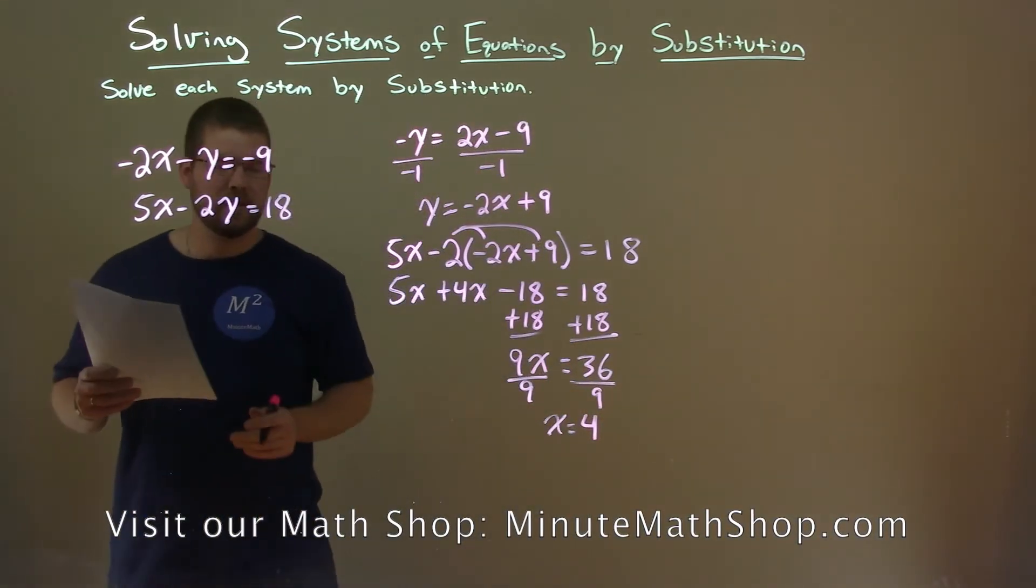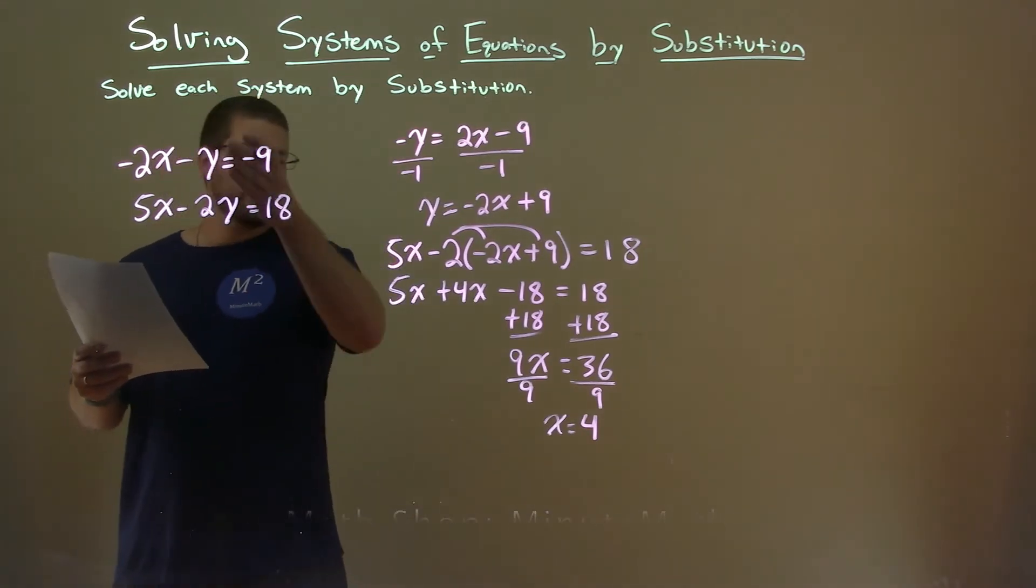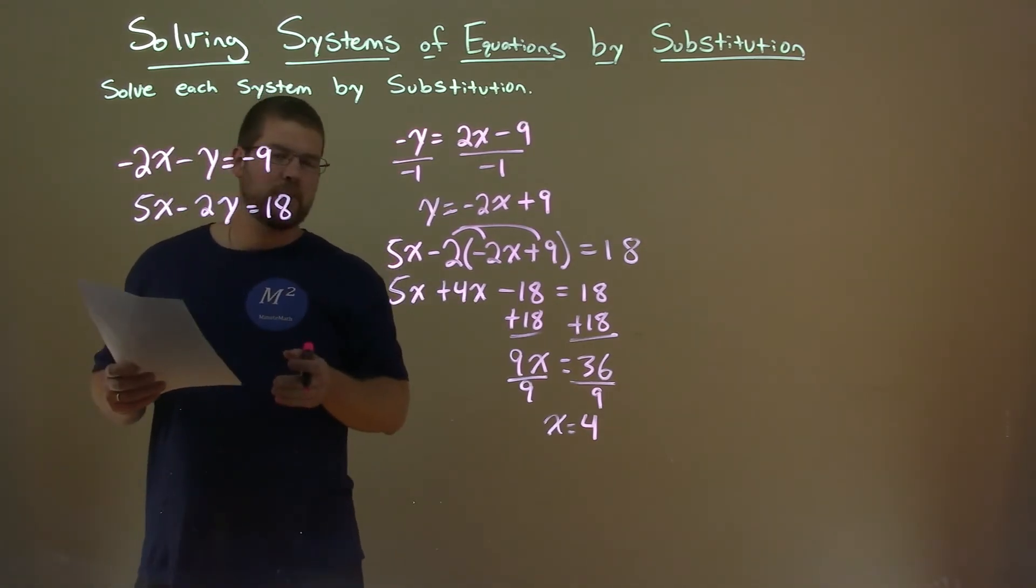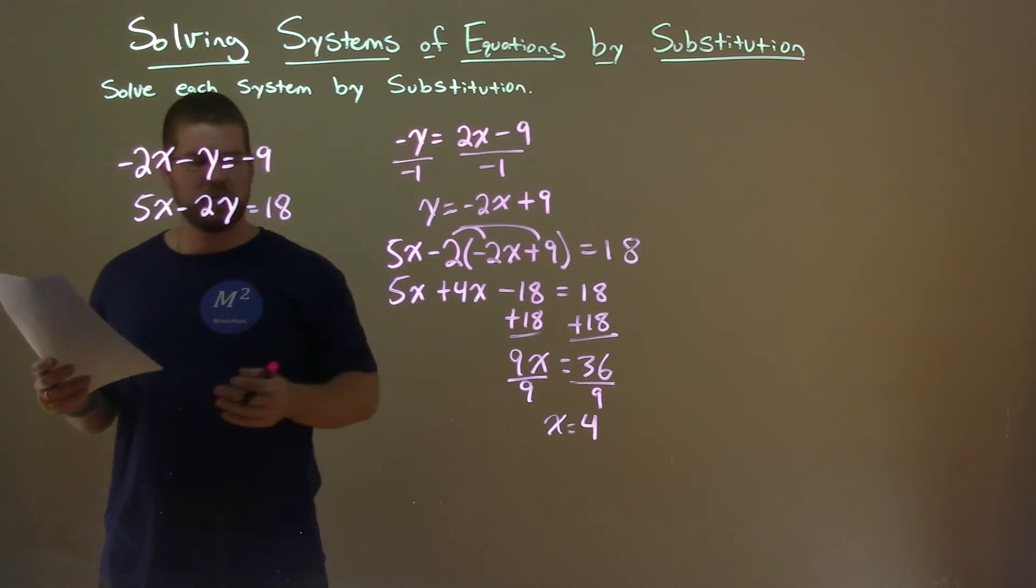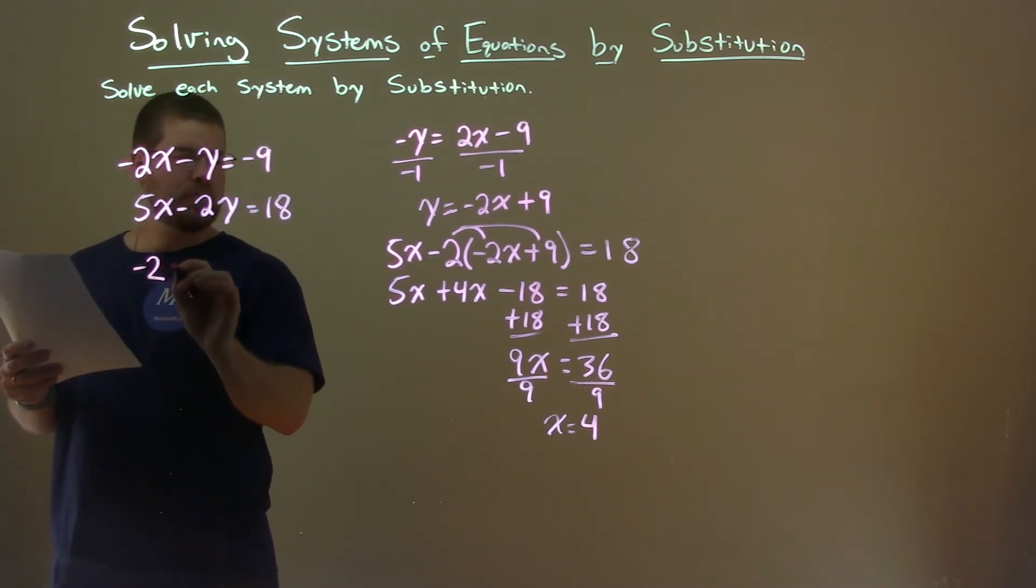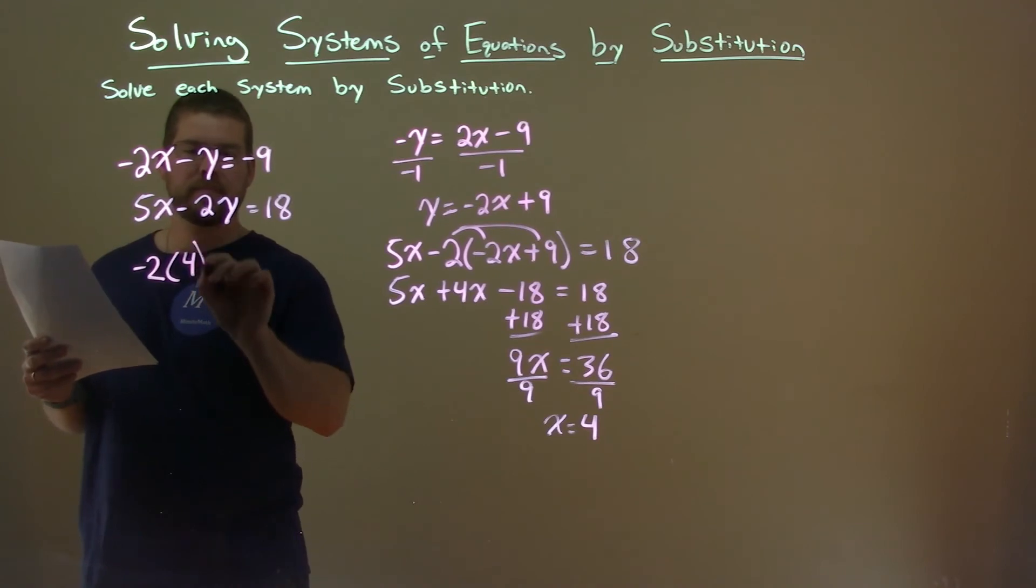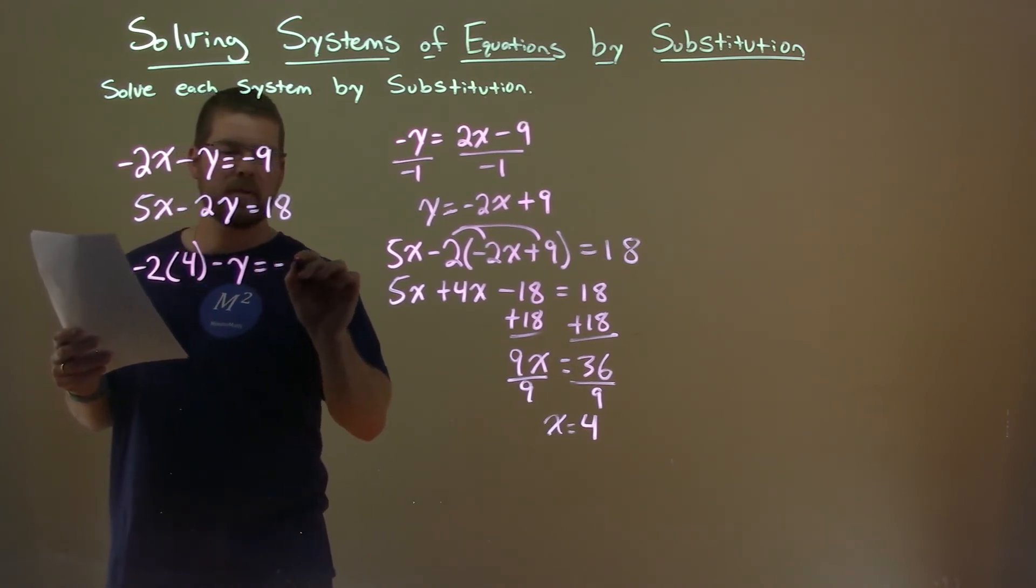We've got to solve for y. So, try to find an equation which I think is easier to solve for y. Again, I think it's the first equation. Minus 2 instead of x, I put in that 4. Minus y equals negative 9.